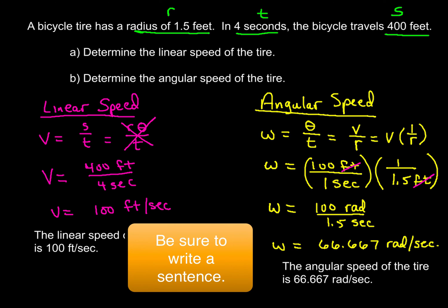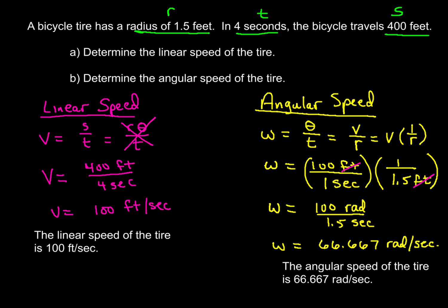And of course, we'll go ahead and write a sentence. The angular speed of the tire is 66.667 radians per second. All right. That's a quick example on linear and angular speed. I hope this helps clarify a couple of pieces for you. Thanks for watching and you guys have a great day. Peace out.